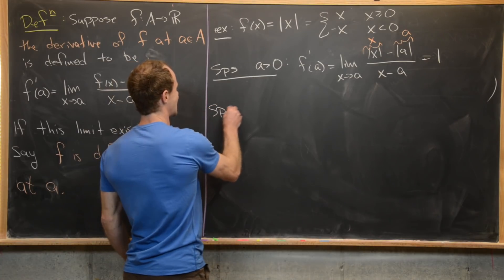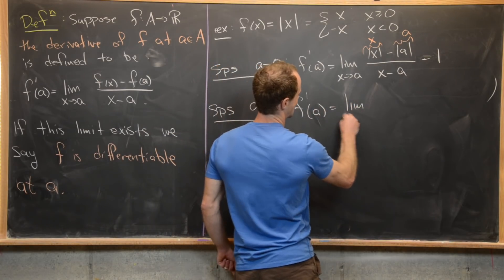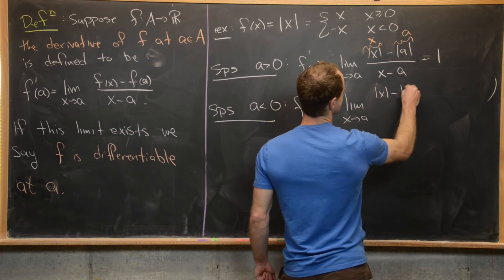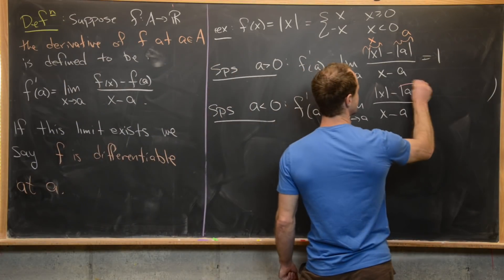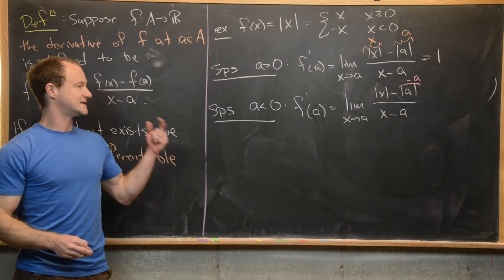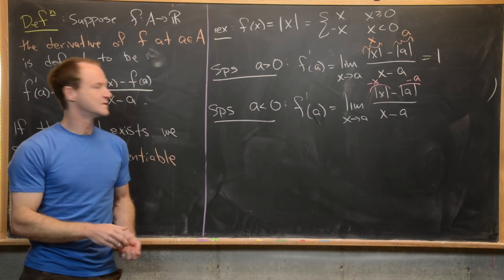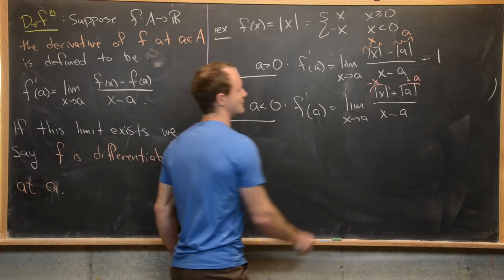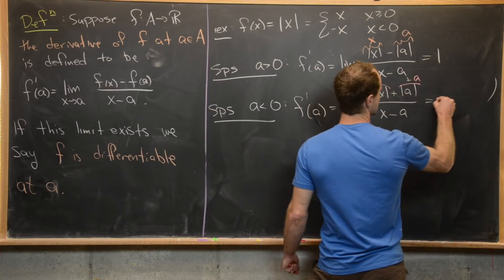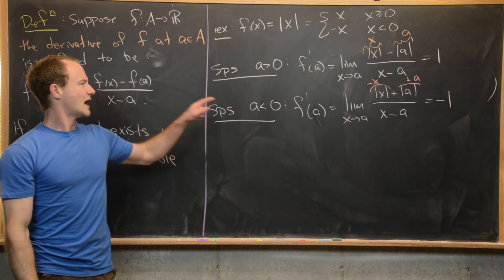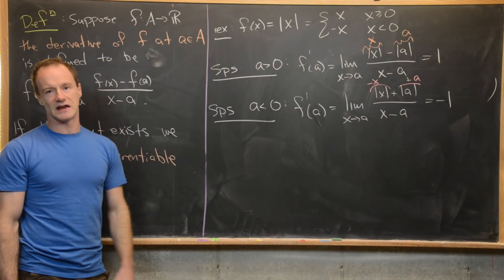Similarly, if a is strictly less than zero, f prime of a is the limit as x goes to a of |x| minus |a| over x minus a. Since a < 0, |a| equals −a, and since x is approaching a, x is negative, so |x| equals −x. We then have −x minus (−a) over x minus a, which is −(x−a) over (x−a). The two minus signs cancel, but the numerator is the opposite sign of the denominator, so this cancels down to −1. So we have a derivative at positive and negative values of a — the function is differentiable there.